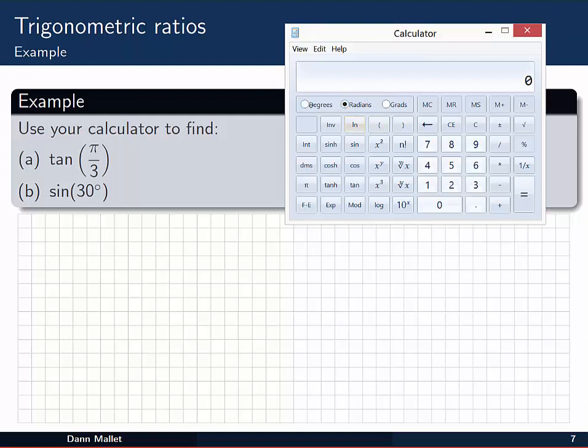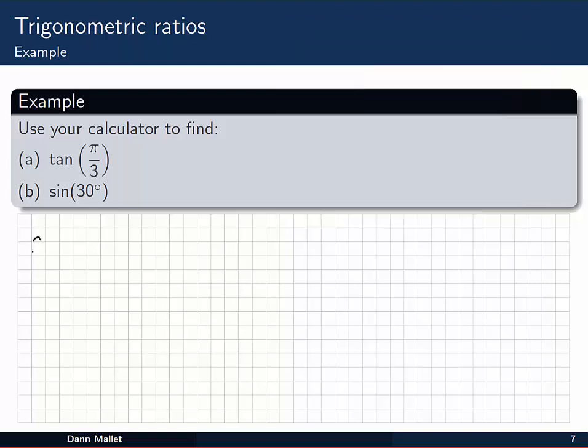It starts off in degrees, I want it in radians. Now I'm going to find pi divided by 3, so I look for the pi button. Divided by 3, that makes sense. And then I want to take the tan of that. The tan is 1.732. So A, tan of pi on 3, approximately 1.732.